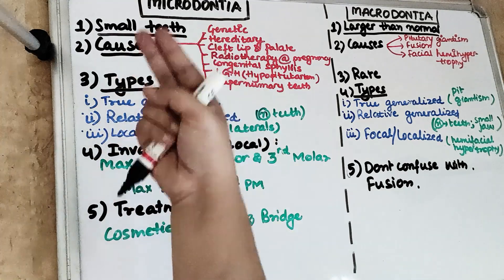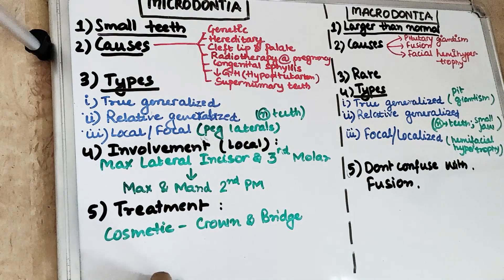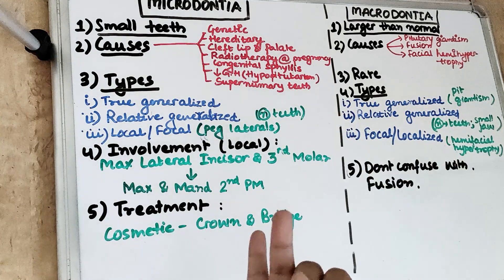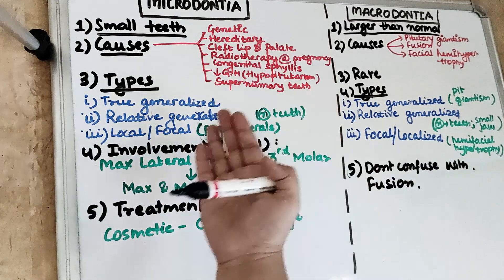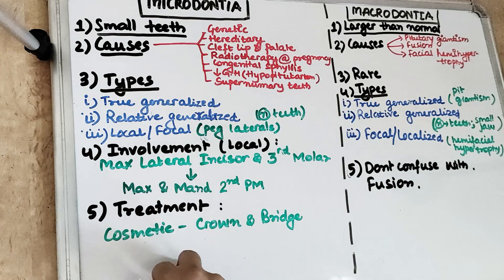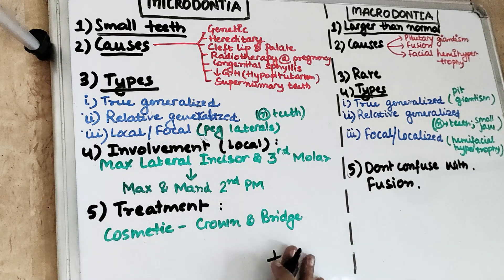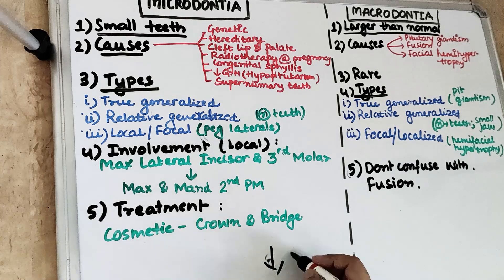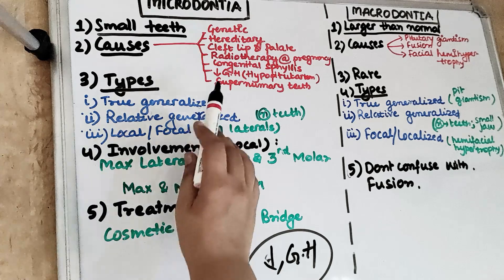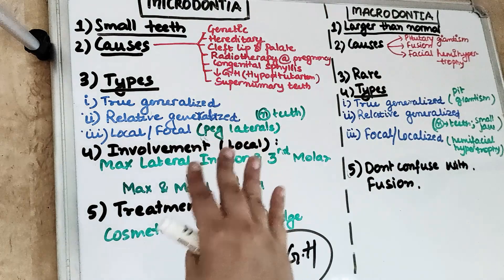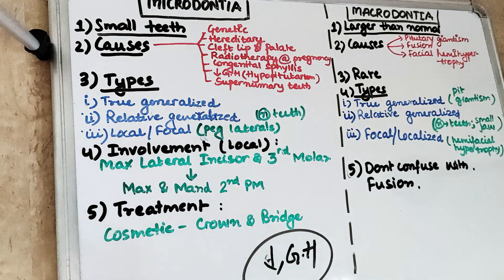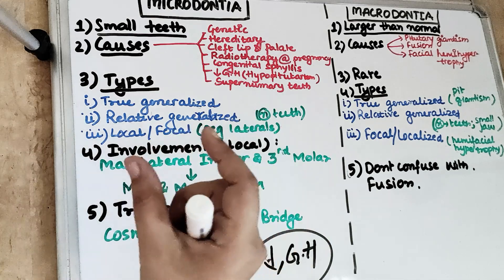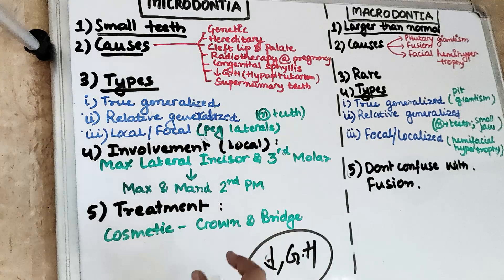The second point is what causes Microdontia. The causes include: genetic and hereditary causes, cleft palate, radiotherapy in a pregnant mother, congenital syphilis, and decrease in growth hormone — that is hypopituitarism, where the pituitary gland is underdeveloped leading to decreased growth hormone. This reduces overall growth, making patients dwarf, and the teeth will also be smaller. In case of supernumerary teeth, they are almost always smaller than normal teeth and often present with a conical shape.